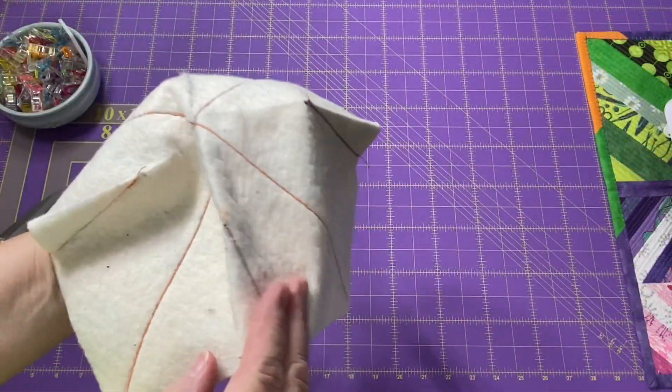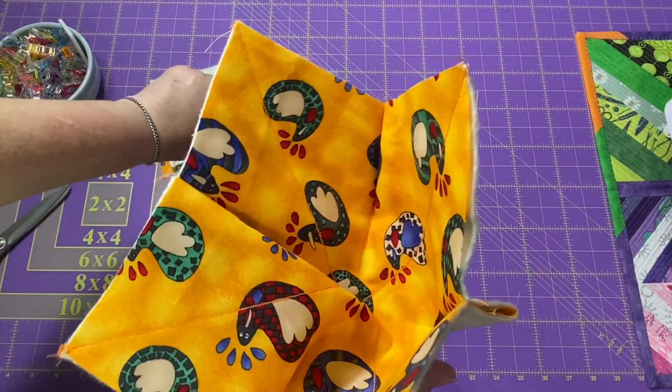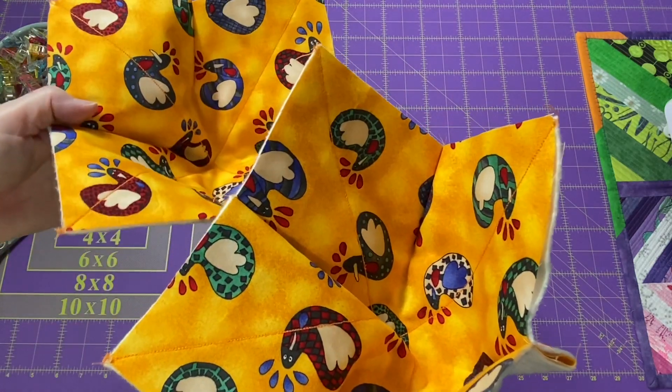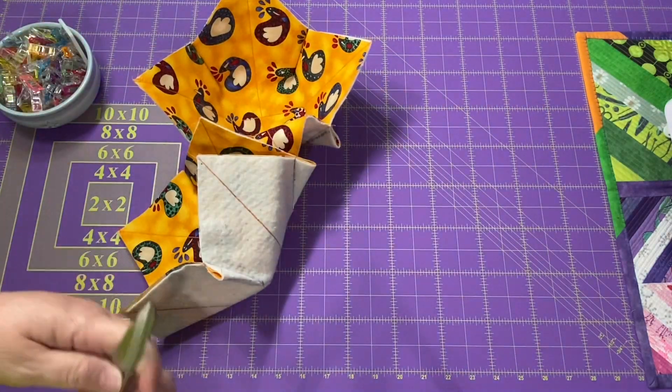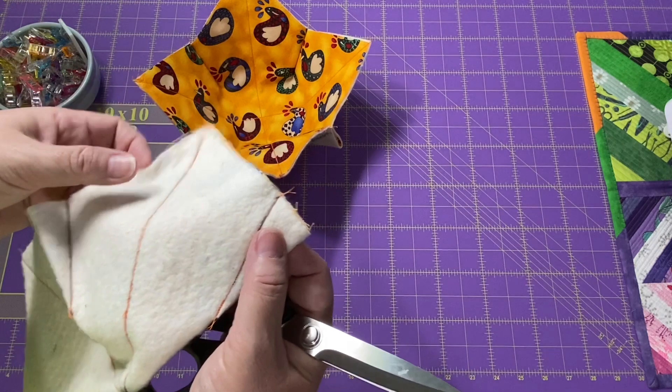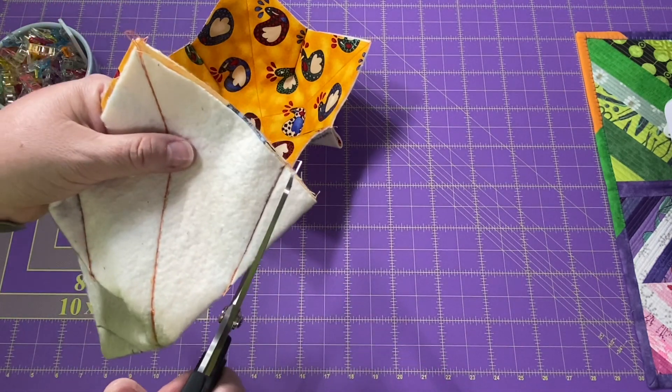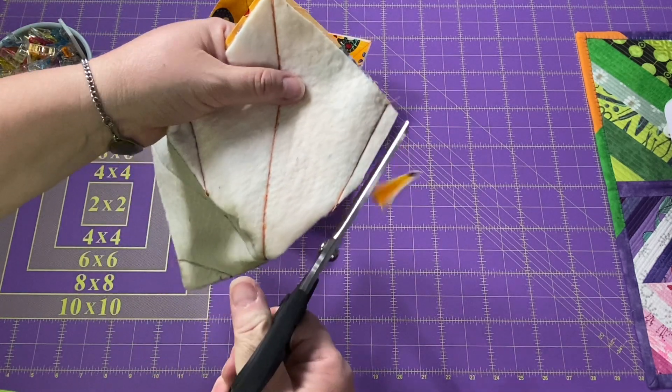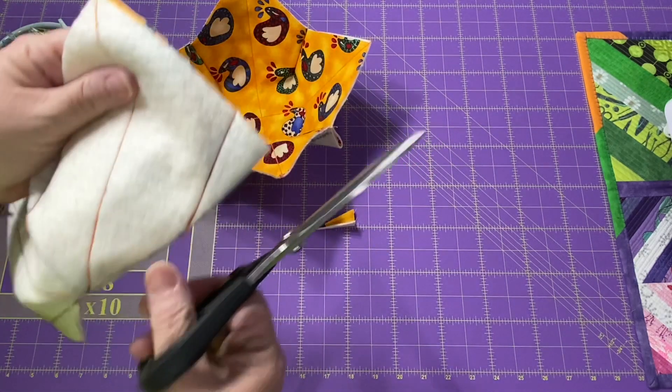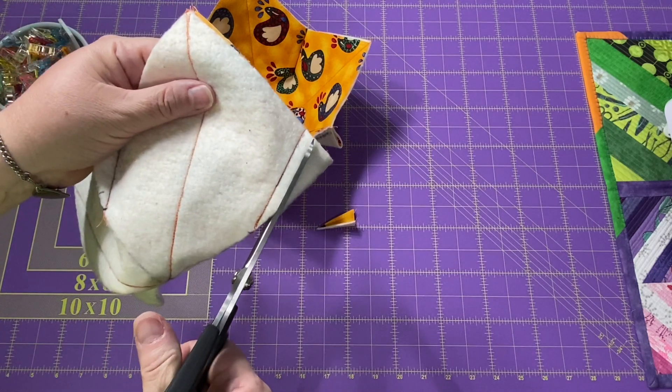So I have all eight darts sewn, four for each portion of my bowl. Leaving about a quarter inch seam allowance, you can use a ruler and a rotary cutter if you like, but I just try to be careful and I trim it a little bit extra so that we don't have that bulk inside our bowl.